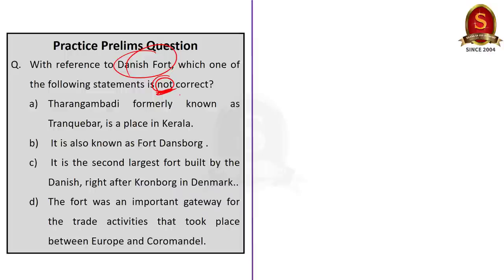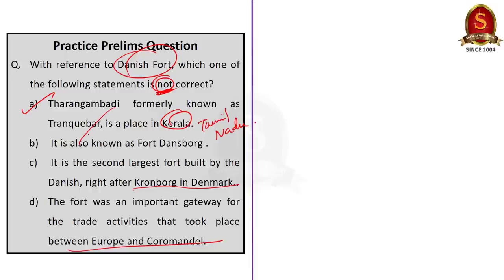Option A: Tarangambadi, formerly known as Trankubar, is a place in Kerala. Option B: It is also known as Fort Danzberg. Option C: It is the second largest fort built by the Danish right after Kronberg in Denmark. Option D: The fort was an important gateway for trade activities between Europe and Coromandel. The correct answer is Option A — Tarangambadi formerly known as Trankubar is a place in Kerala. The first part is correct but the second part is incorrect: Trankubar is in Tamil Nadu, not Kerala.